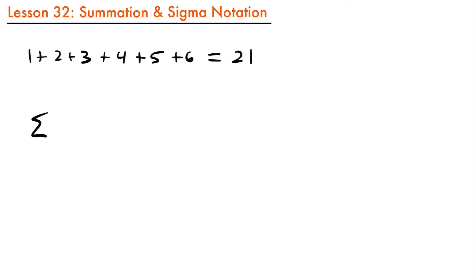We have our Greek letter sigma, and then we have an upper bound of 6. We're going to be starting at 1, so i equals 1, and we have this letter i. What this notation means is that for values of i starting at 1 and counting up to 6, we want to sum together those terms.